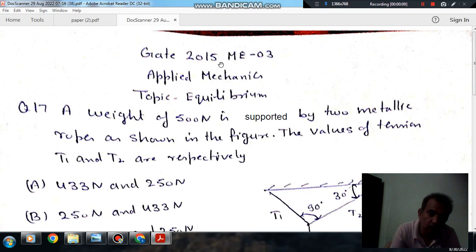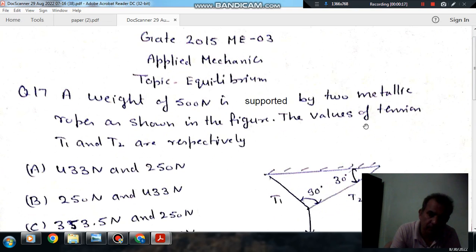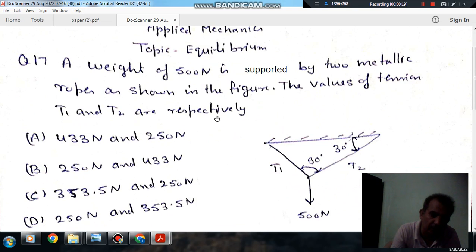Question number 17 from Gate 2015 ME03. A weight of 500 N is supported by two metallic ropes as shown in the figure. The value of tension T1 and T2 are respectively: